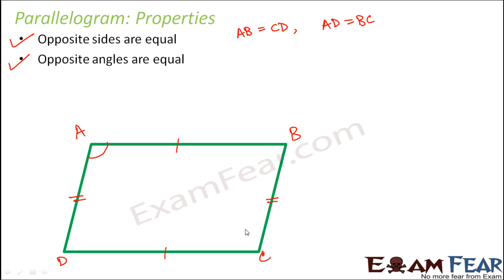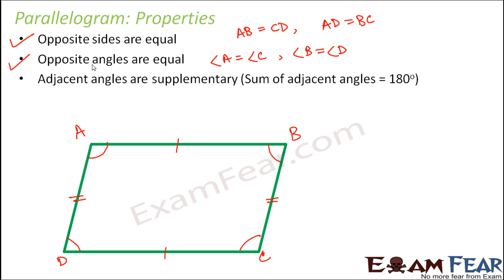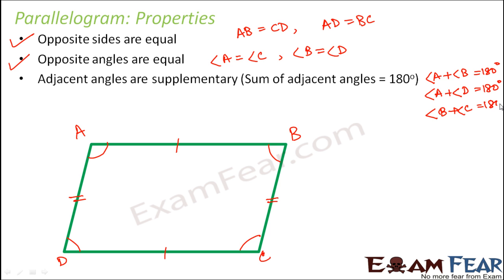Opposite angles are also equal - that is angle A is equal to angle C and angle B is equal to angle D. Adjacent angles are supplementary, meaning the sum of adjacent angles is equal to 180 degrees. Two angles are supplementary if their sum equals 180 degrees, so angle A plus angle B, angle A plus angle D, or angle B plus angle C each equal 180 degrees.